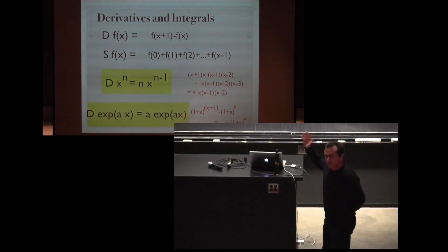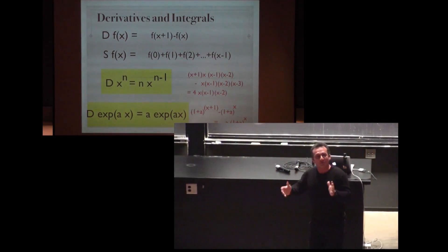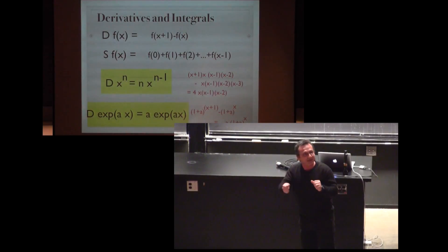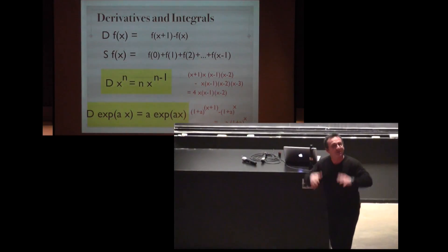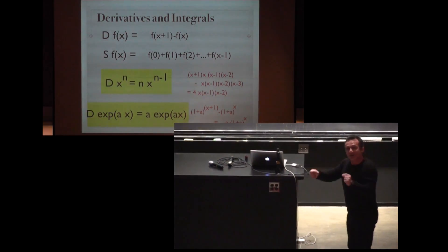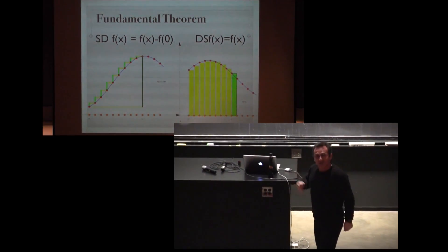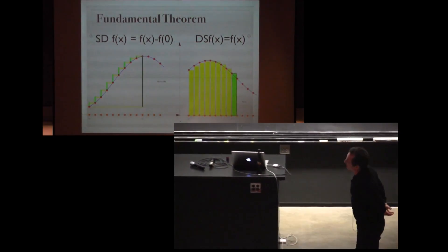We can also take the exponential function, take the compound interest formula, 1 plus a to the x. a is the interest, x is the number of years. That's your fortune. You take the derivative, what you gain is a times the exponential function.